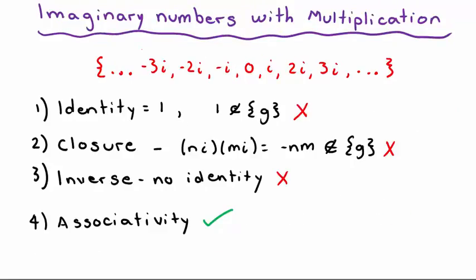For number 5, the imaginary numbers with multiplication fail spectacularly. The identity needs to be 1, but 1 is not an imaginary number, so identity fails. Closure similarly fails because multiplying two imaginary numbers yields a real number, which is not in the set. Since there's no identity, inverse can't even be checked. Associativity still holds, but that's about it for this one.